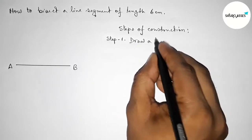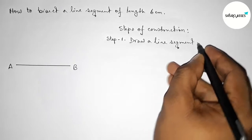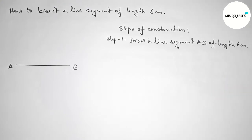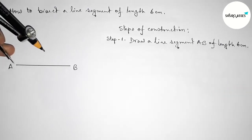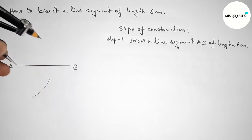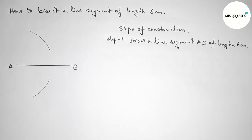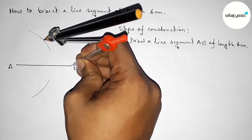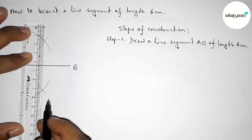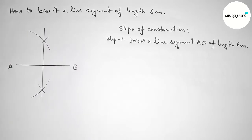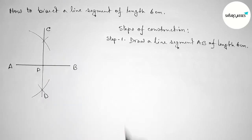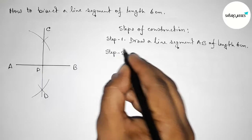First, draw a line segment AB of length 6 centimeters using a compass. Next, we have to bisect the line AB. Putting the compass on point A and taking a length greater than half of AB, drawing an arc above and below. Then putting the compass on point B with the same length and cutting arcs above and below. Joining these intersections, taking point C and point D. The line CD bisects line AB at point P.